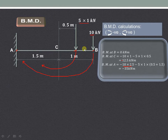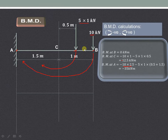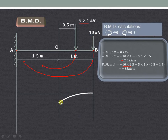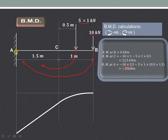Using these values we can easily draw the bending moment diagram. Between B and C there was a UDL, so a parabolic curve is drawn there, and then a straight line between C and A. In this way we can draw the shear force and bending moment diagrams. Thank you very much for watching.